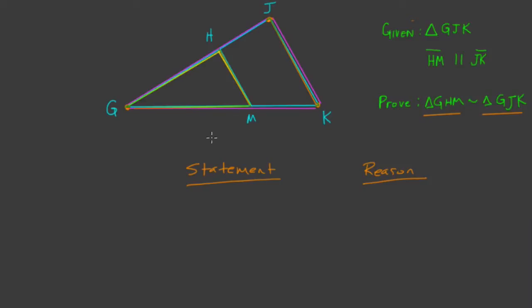So we want to start with some given statements. I guess I will start with the triangle statement that G, J, K is a triangle, and I'll put that that's given. And a big step then is the next one that H, M is parallel to J, K. That's also given.